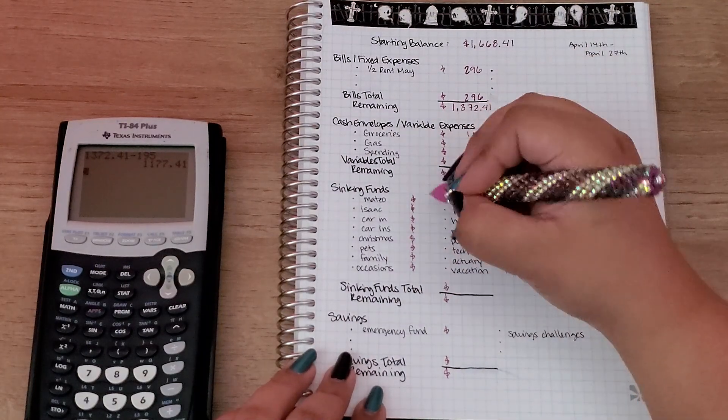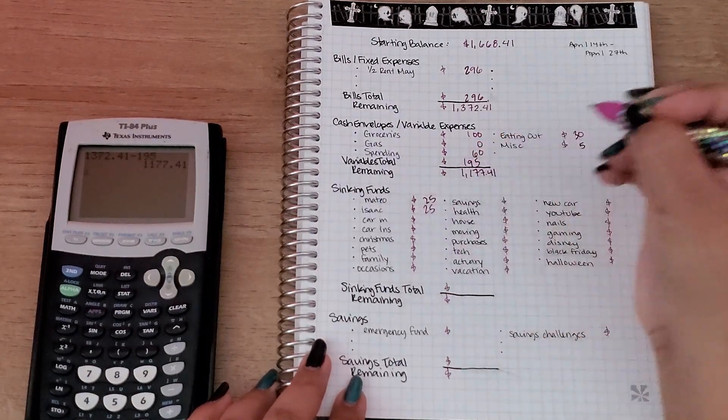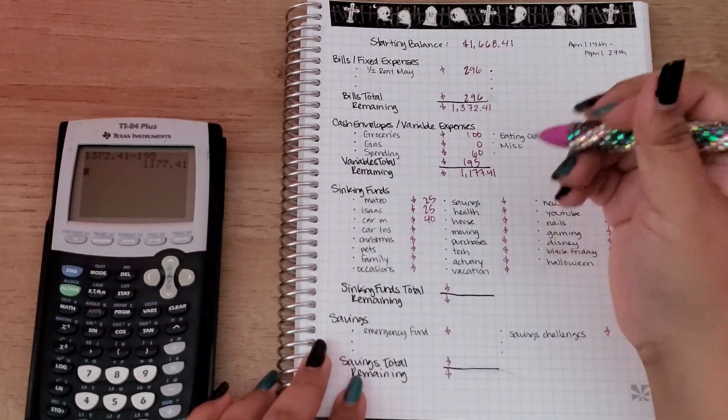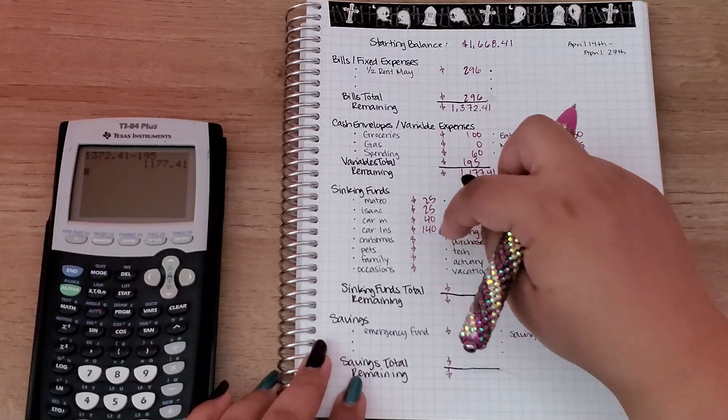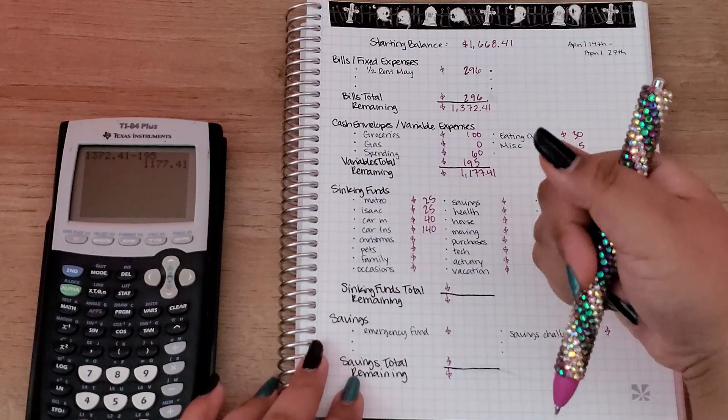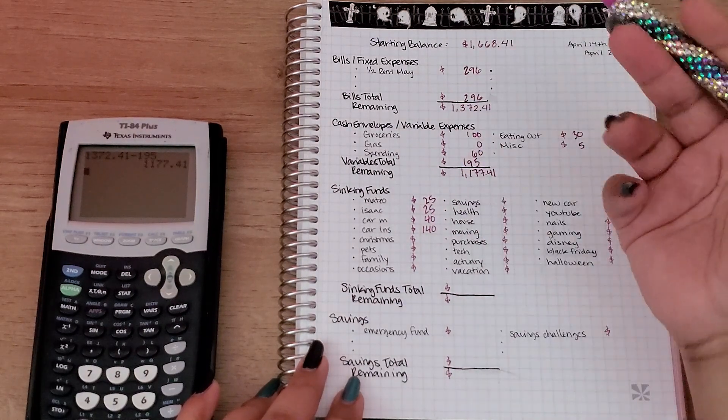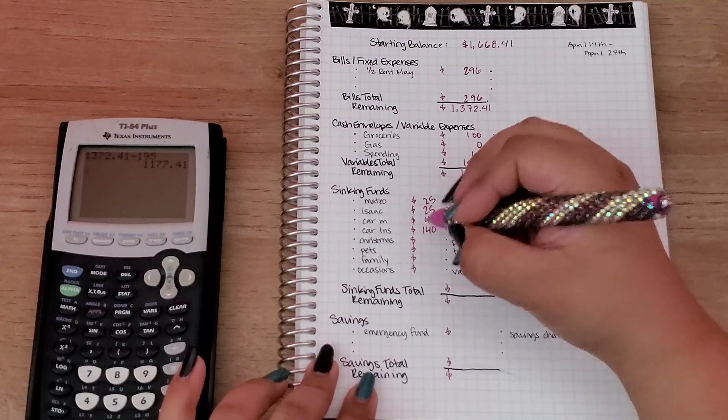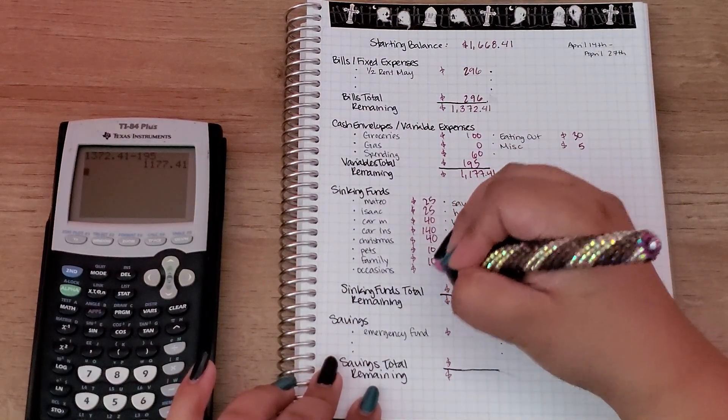Mateo is going to get $25, Isaac is going to get $25, car maintenance is going to get $40. Car insurance, I pretty much budget around $140 to $200 every other paycheck because I pay my car insurance every six months. So I'm putting money in here so when that time comes I have all the money ready to go. Christmas is going to get $40.